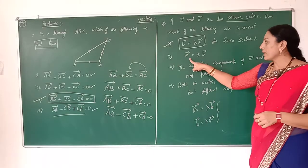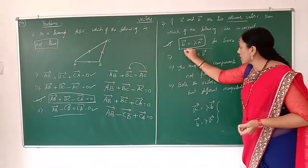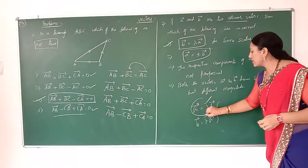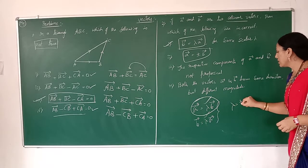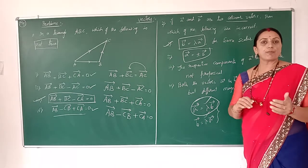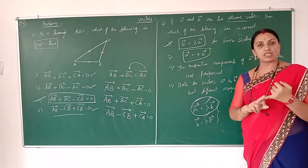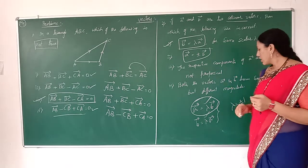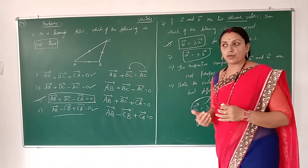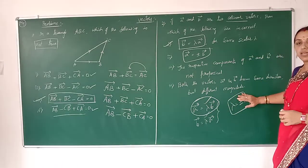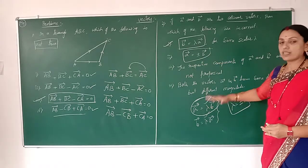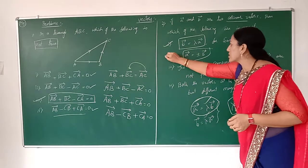The second result: vector A equals plus or minus vector B. This can be compared with the first result where lambda equals plus or minus one. Since plus or minus one is a scalar number, vector A equals plus or minus one times vector B satisfies the collinear definition. Therefore the second result is also true.